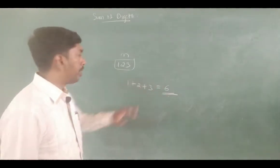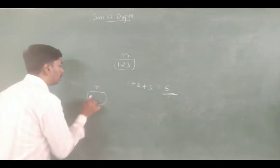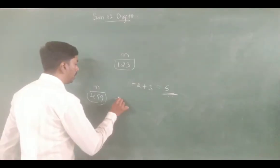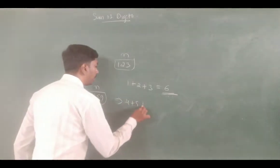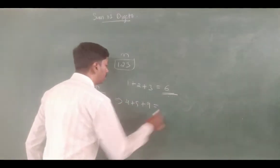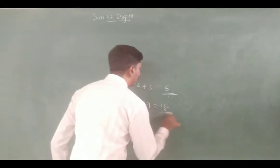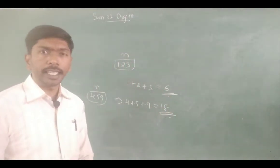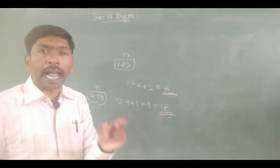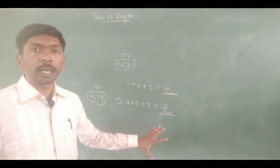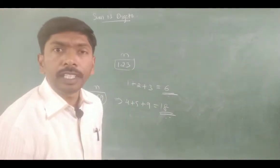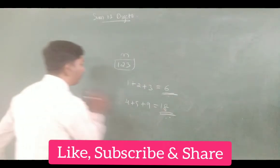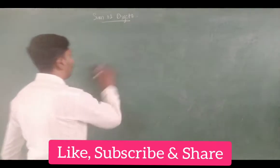For example, if n value is 459, then the sum of digits is 4 plus 5 plus 9, which equals 18. This is the answer — the sum of digits. This program is very important.